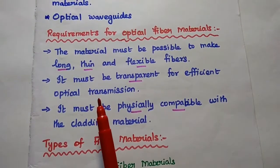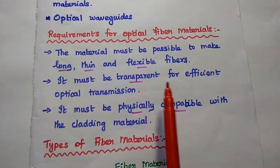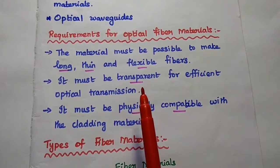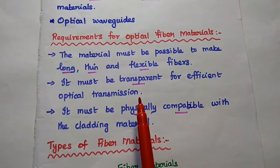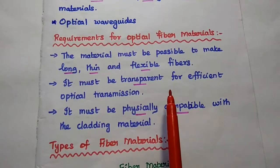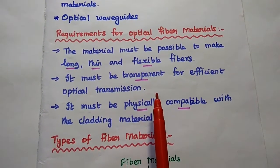The next one is, it must be transparent for efficient optical transmission. That means, the fiber materials should be optically transparent for transmitting the light signal through it.